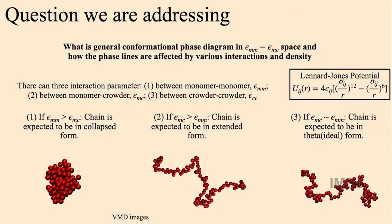The general intuition is: if epsilon_mm is greater than epsilon_mc, meaning monomer-monomer attraction is greater than monomer-crowder attraction, monomers want to attach more to each other and will form a collapsed form, as visible in the VMD snapshot. If epsilon_mc is greater than epsilon_mm, monomers have more attraction to crowders and will form an extended kind of form. The third case is when the interactions are comparable.